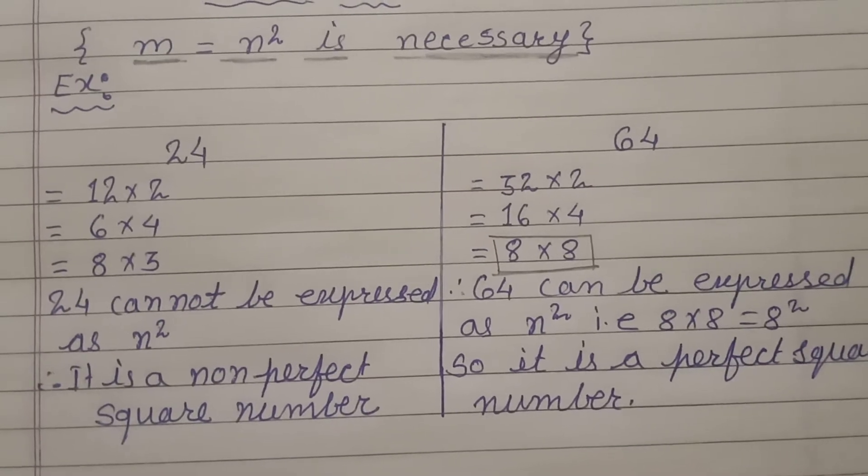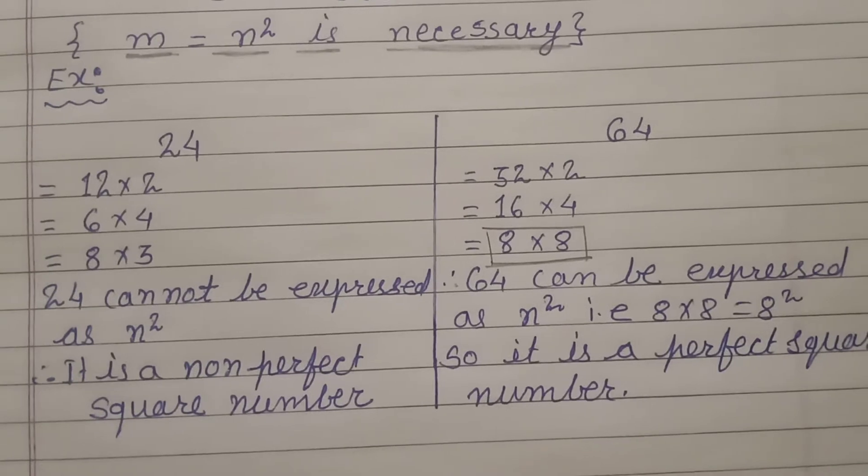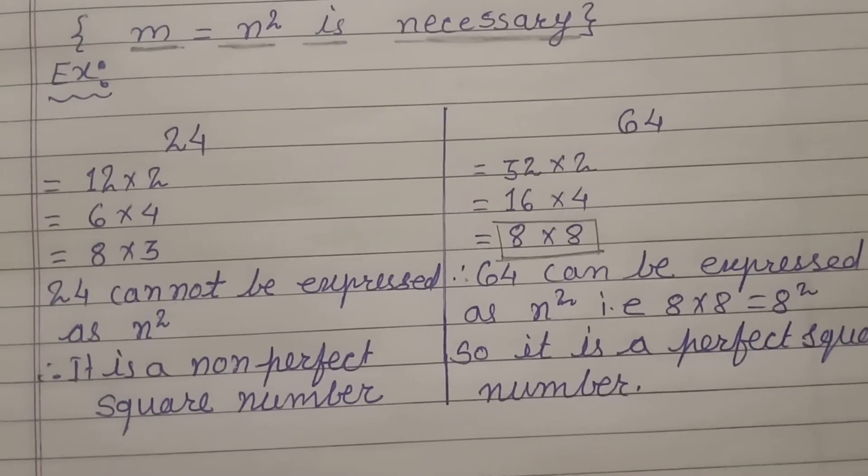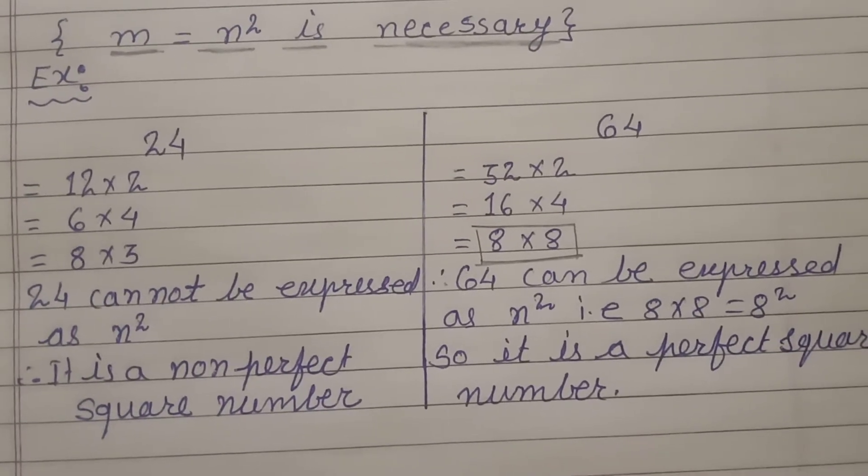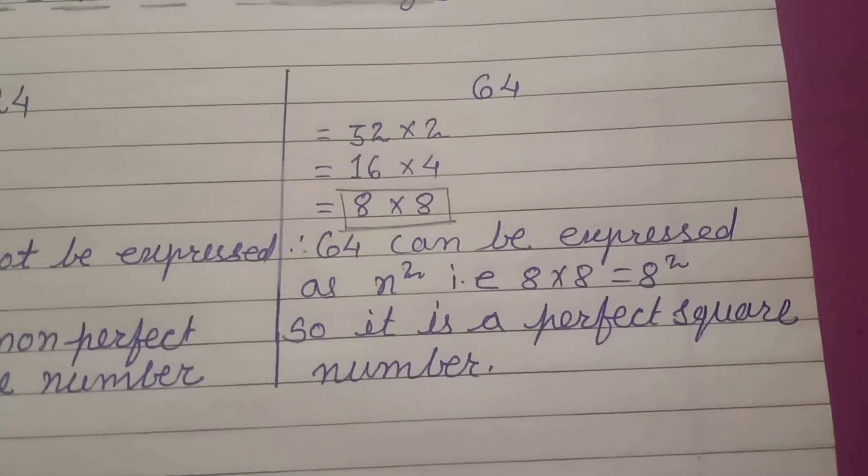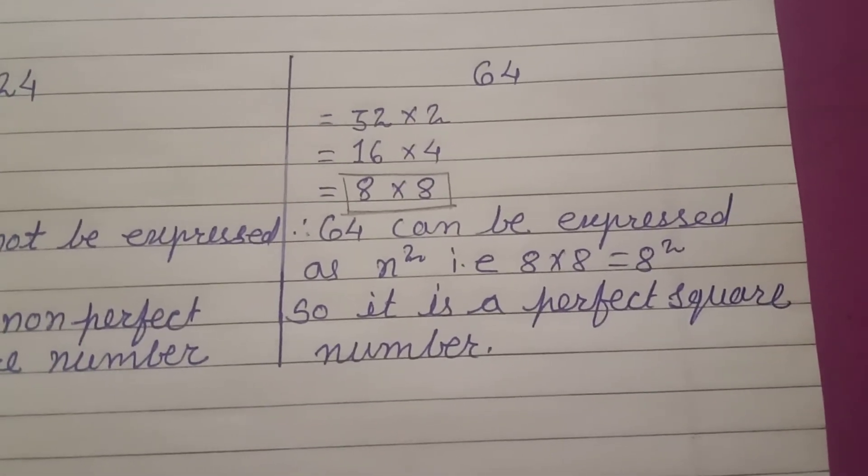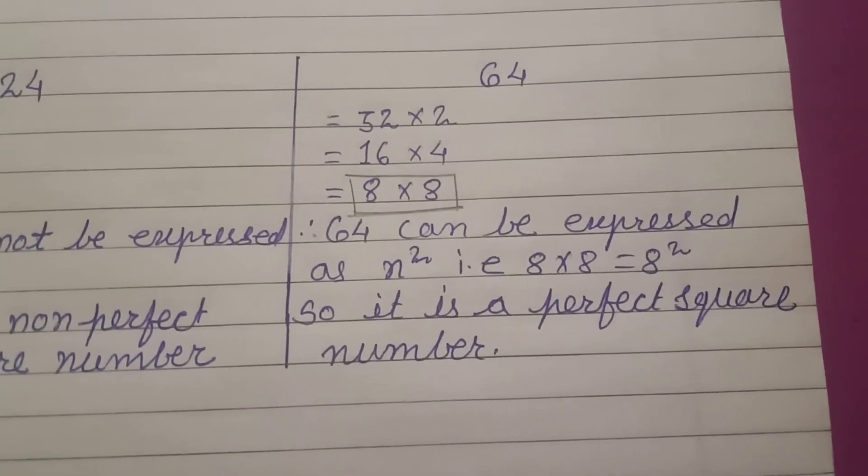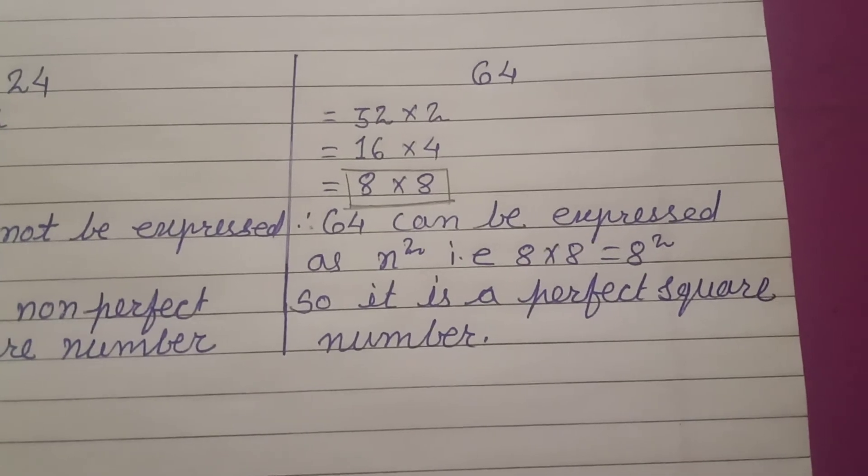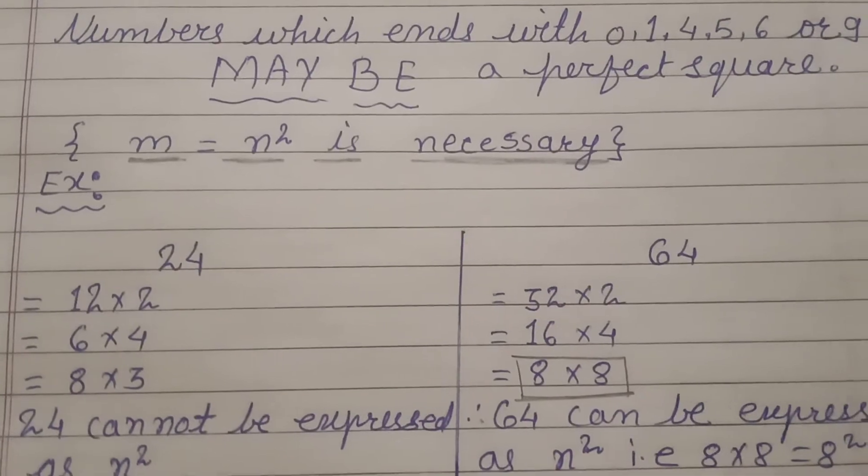You can see I have factorized 24 here. It is 12 into 2, 6 into 4, and 8 into 3. But we cannot express 24 as n squared. But 64 we can write as 32 into 2, 16 into 4 and 8 into 8 means we are able to express 64 as n squared as the definition which is required.